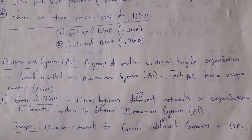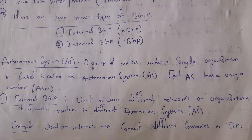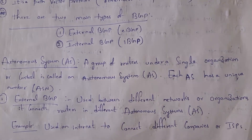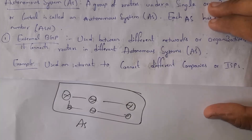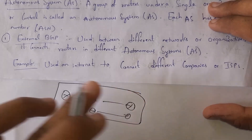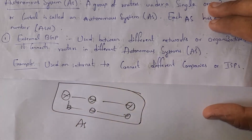There are two types of Border Gateway Protocol: one is external BGP and the other is internal BGP. Before explaining internal and external BGP, you need to know what an autonomous system is. A group of routers within a single organization is called an autonomous system. For example, in a software company there are many routers, and all these routers together are considered an autonomous system. Each and every autonomous system has a unique number called an AS number.